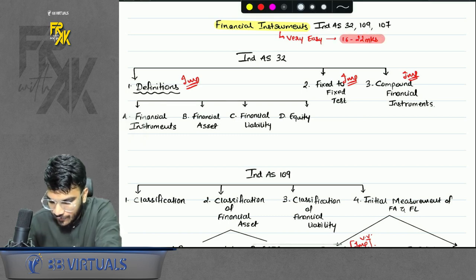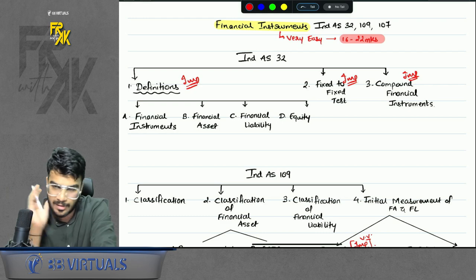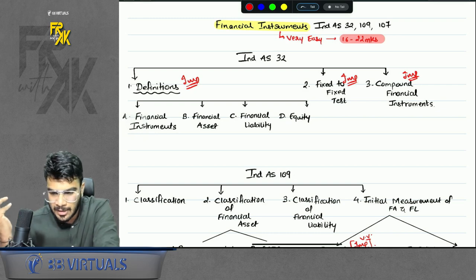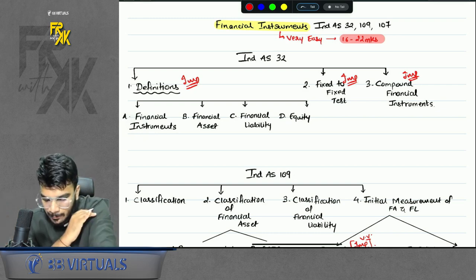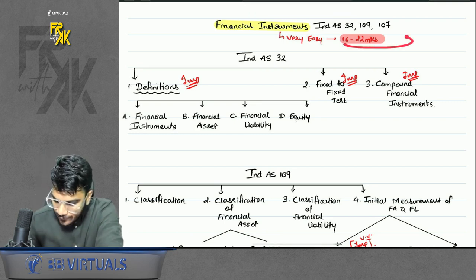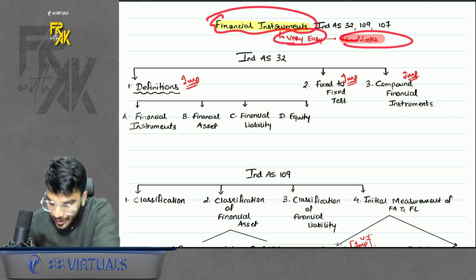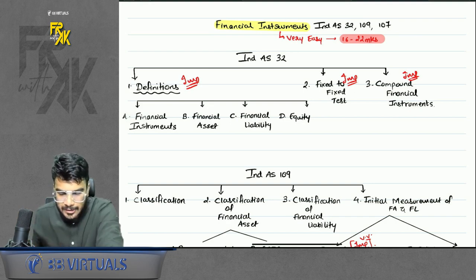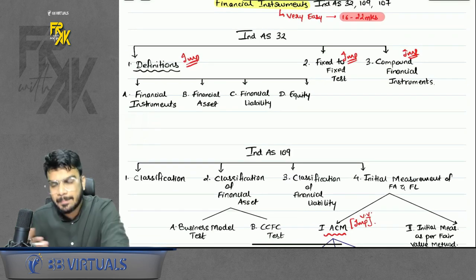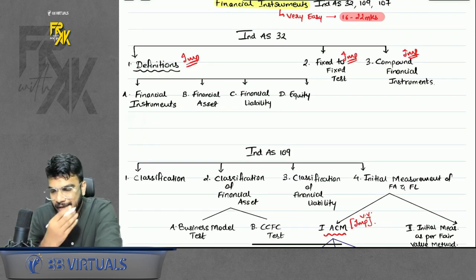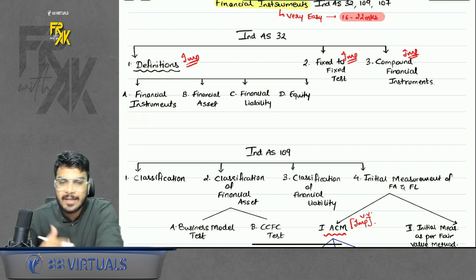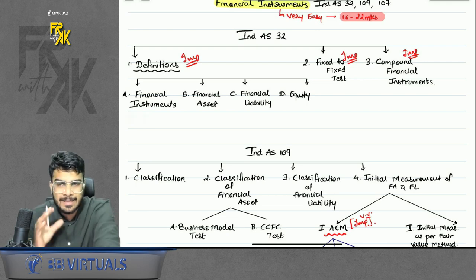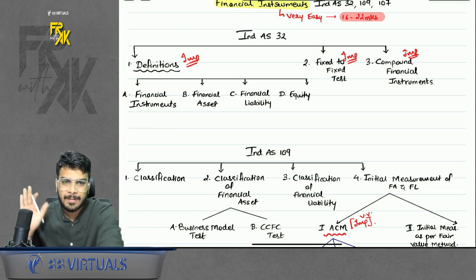That means 15 to 20 percent of the questions will come from this chapter — one big question of maybe 10 marks, one small question of maybe 4 marks, and 1 to 2 MCQs. It is not difficult at all; it is very easy and very scoring. You will have to be patient because there are many points and we will go slow, but once comfortable with all the points the full topic will become very easy.